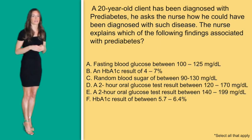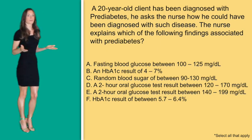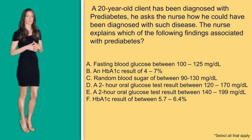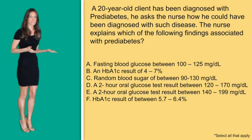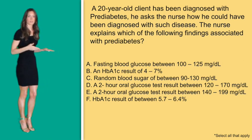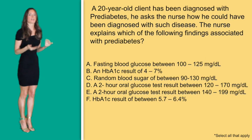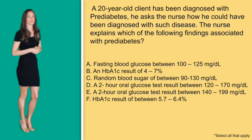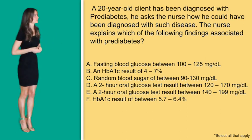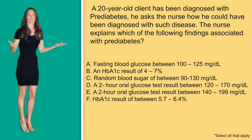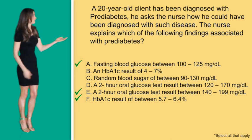Finally, option F: a hemoglobin A1C result between 5.7 and 6.4. Since normal levels are between 4 and 7, this would be the next appropriate elevated level, making this a sign of pre-diabetes as well. The final correct answer options are A, E, and F, because all of these are the diagnostic criteria for pre-diabetes.